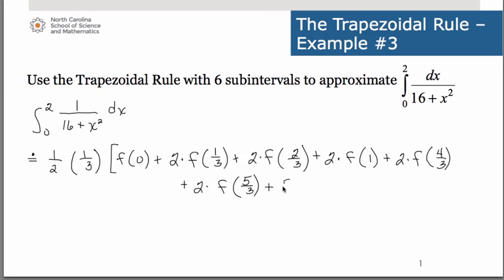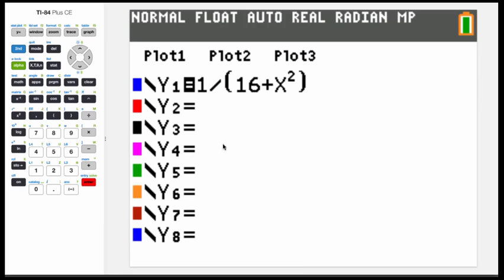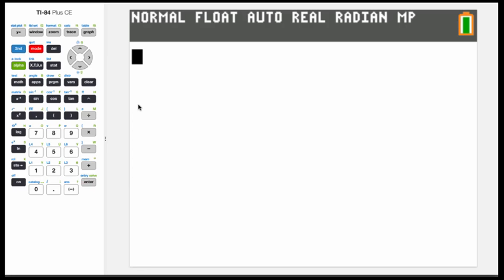We are going to evaluate this by using our graphing calculator and the built-in functions that it includes. Let's switch to our graphing calculator. You'll need to have under y equals the function itself, 1 divided by the quantity 16 plus x squared. Please don't forget your parentheses around the denominator. Then you can go to your quit screen and we'll type out that which we had in the square brackets.